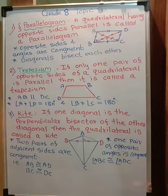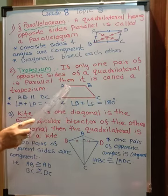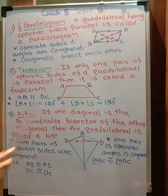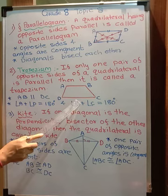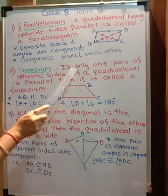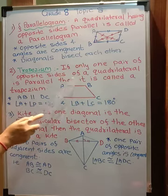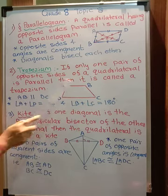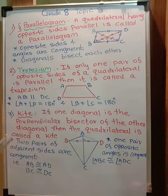Let us go to the next quadrilateral, that is trapezium. Look at this diagram - you can see these two lines are parallel but these two are not; if extended, they would intersect each other. The definition: if only one pair of opposite sides of a quadrilateral is parallel, then it is called a trapezium. So only AB and DC are parallel; AD and BC are not parallel.